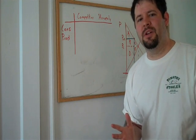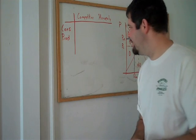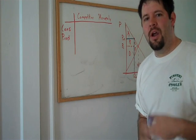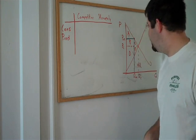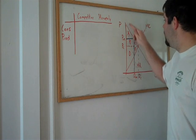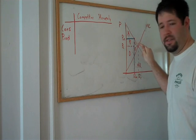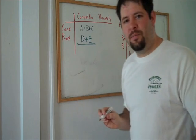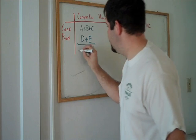So in the competitive scenario, we can go ahead and do our consumer surplus and producer surplus. Consumer surplus would be A plus B plus C. Producer surplus would be D plus E. Add it together, you get A through E as your social surplus.